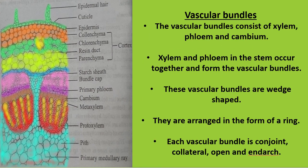The vascular bundle contains xylem, phloem, and cambium. Xylem and phloem occur together in the vascular bundle. The vascular bundle is wedge-shaped, whereas in monocots the vascular bundle is skull-shaped. Around the pith, the vascular bundles are arranged in a ring-like manner. The vascular bundle is conjoint, collateral, open, and exarch.